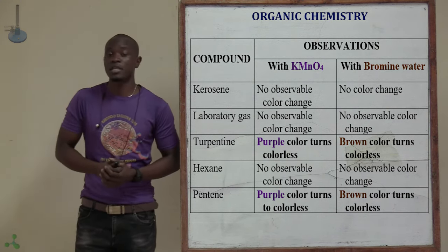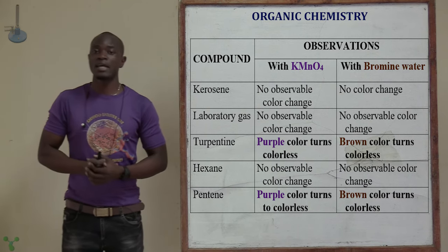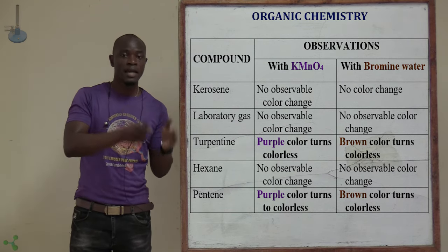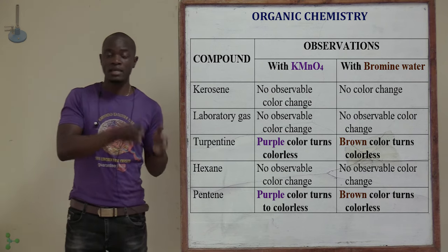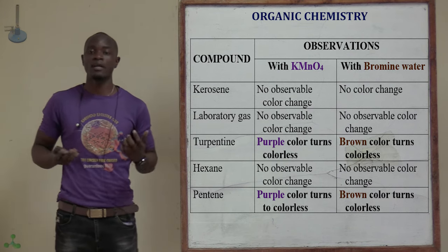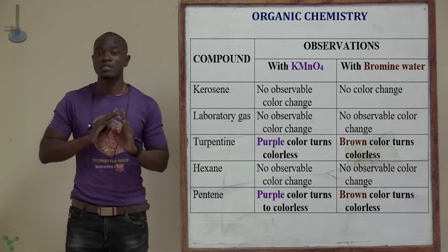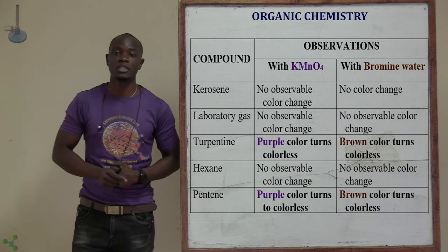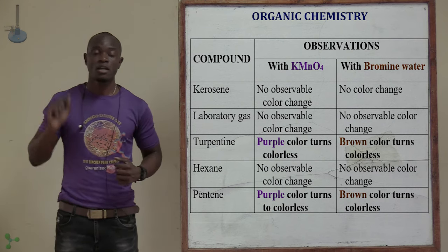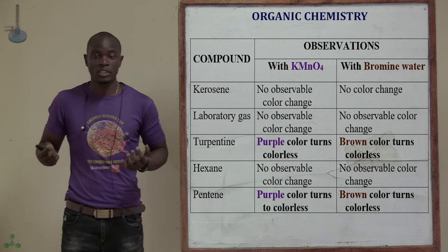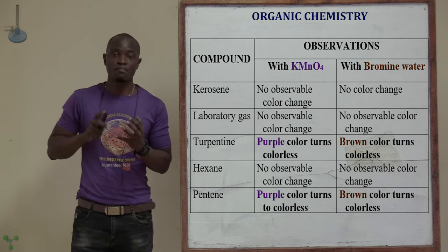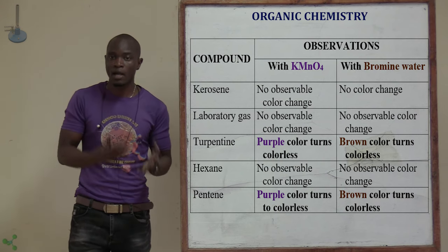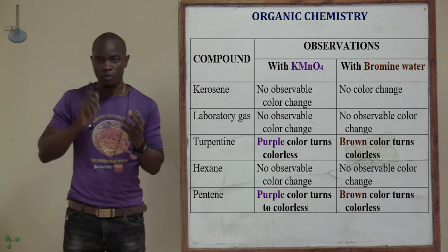You can also use laboratory gas, which can be methane gas or butane gas. From the names methane and butane ending in -ane, these are alkanes. Since these are alkanes and alkanes are saturated hydrocarbons, we expect no color change to be observed. If you bubble the laboratory gas inside potassium permanganate, no observable change will take place. Also in bromine water, no observable change will take place because methane and butane are alkanes and therefore saturated hydrocarbons.